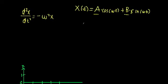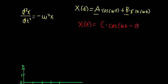Now what if I were to tell you that there is another form of this general solution that conveys the same information but in a different way? It's x of t is equal to C times cosine of omega t minus phi. This is what we call amplitude-phase form, because the undetermined coefficients correspond to the amplitude of the sinusoid and the phase of the sinusoid.